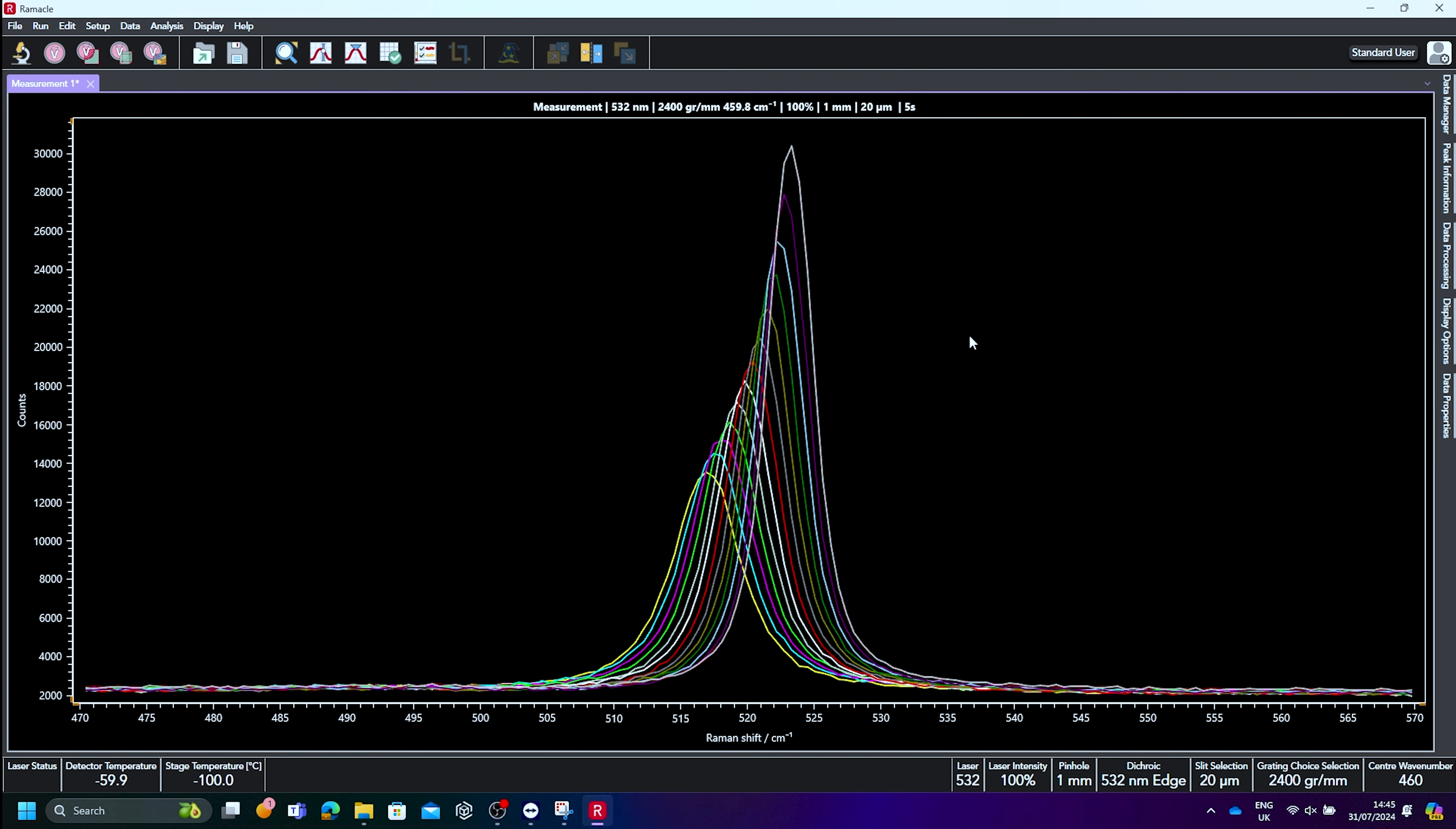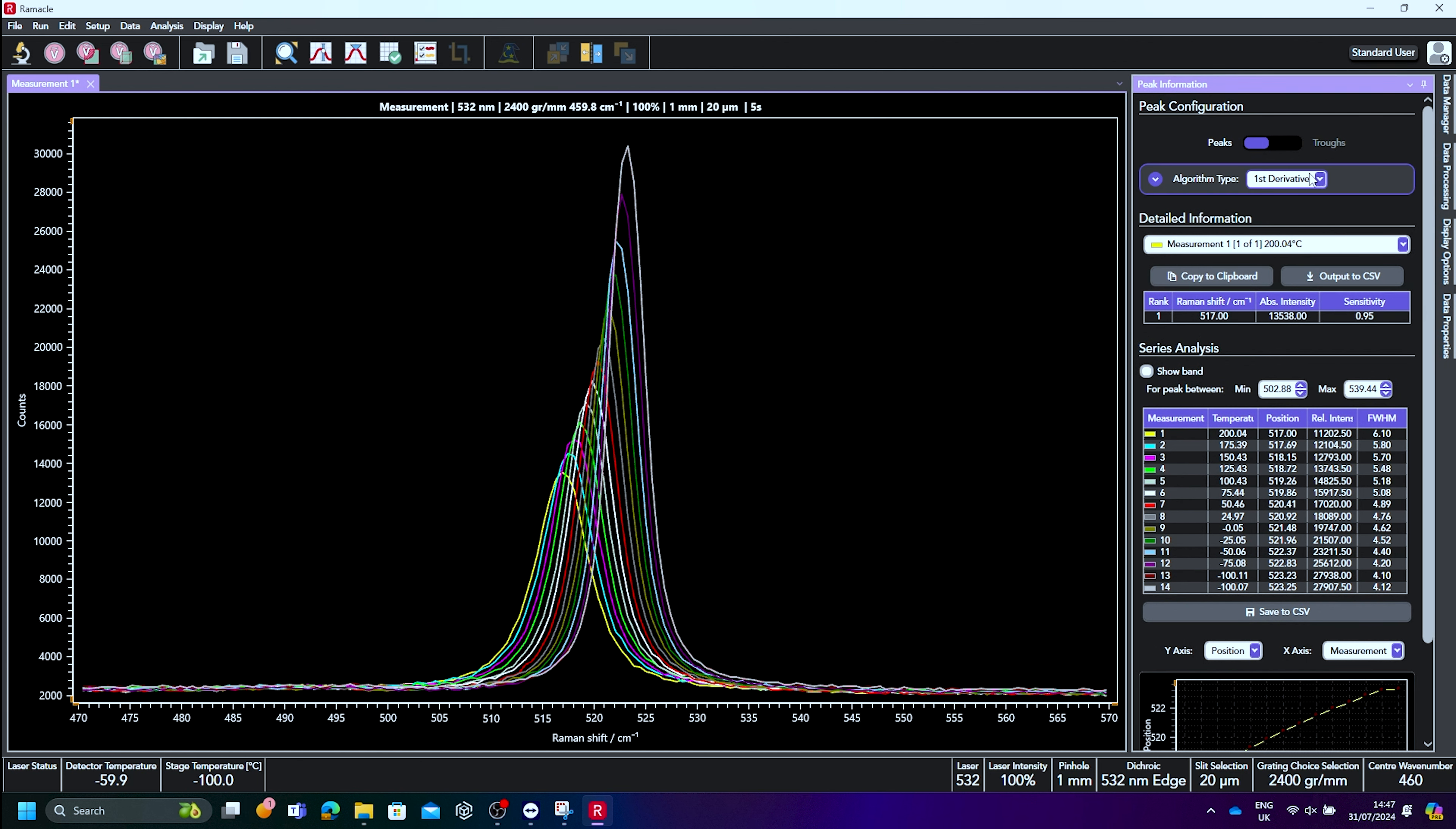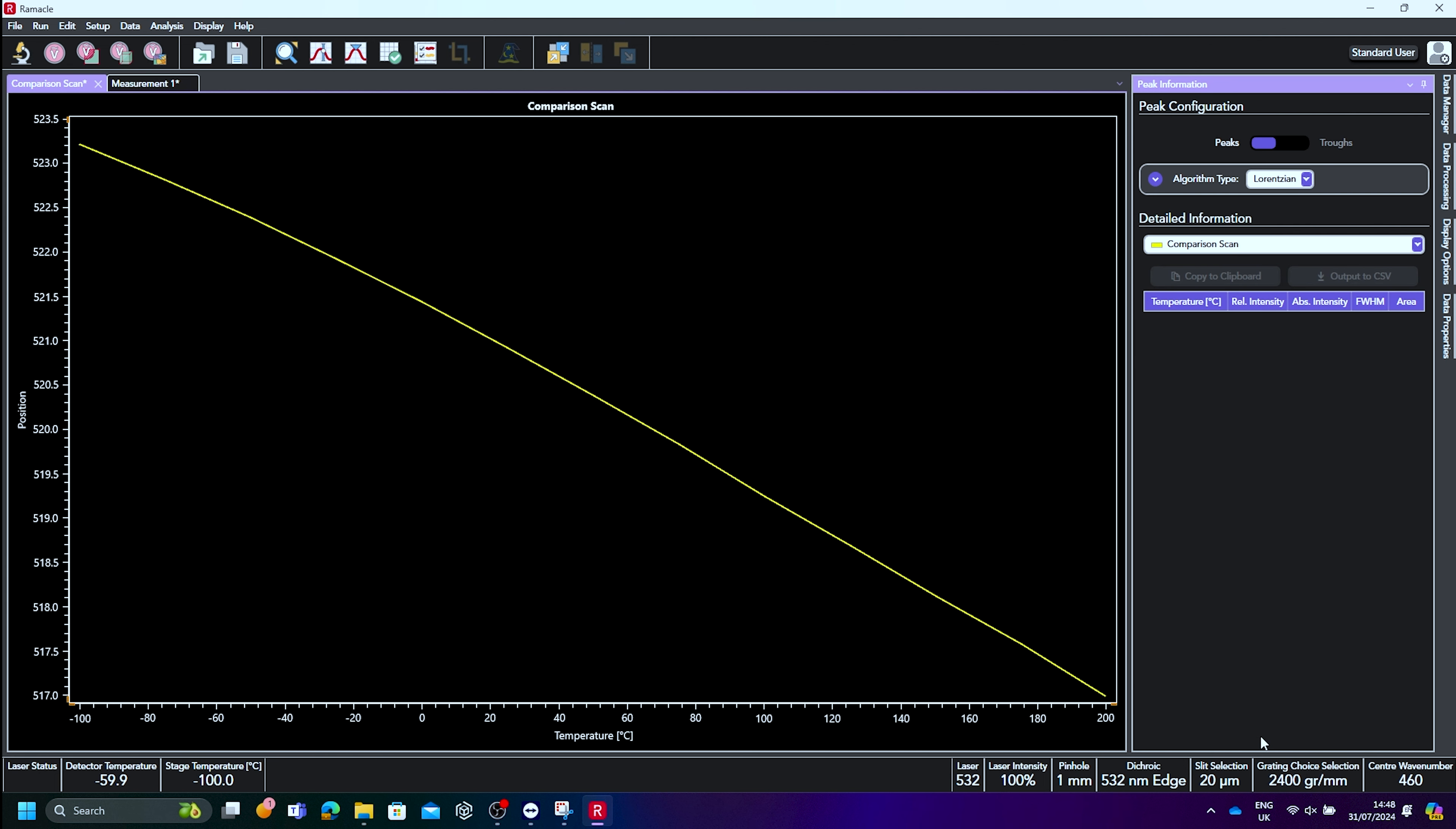We can now either export the resulting data, process it, or perform trend analyses showing how various spectral parameters change with temperature. To do the latter, select peak information, select show band and ensure that the white box on the spectrum is covering your band of interest, and set the x and y axes accordingly. This trend analysis can also be exported to show more clearly how your samples change with temperature.